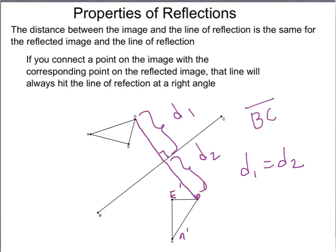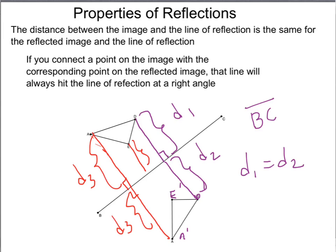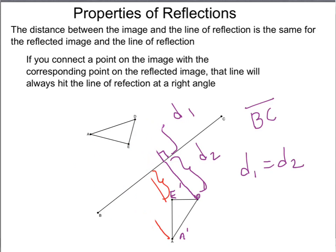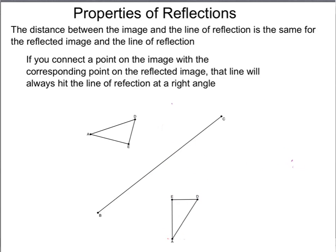If we did this for another pair of corresponding points — say A — we draw the perpendicular line to find the distance between A and the line of symmetry. That distance D₃ equals the distance from A prime to the line. The same holds for E. This is actually another way to define a reflection: a transformation that flips an image over a line but maintains the distance to that line.